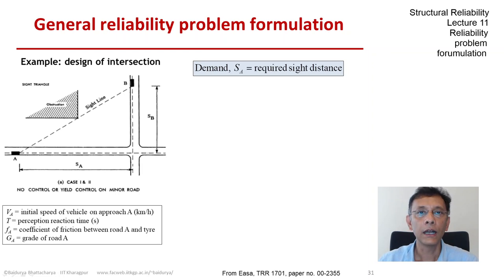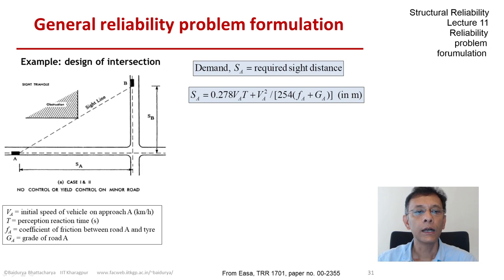And that depends on quantities like the speed of the vehicle, the perception reaction time of the driver, the coefficient of friction between road and tire, the grade of the road, and so on. So you see one parametric fit of this sight distance in terms of these quantities.